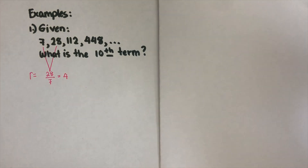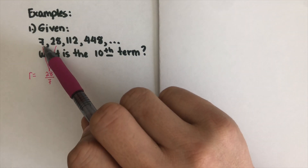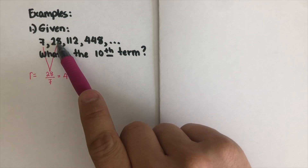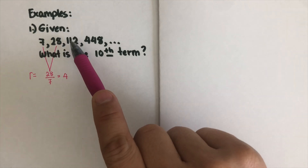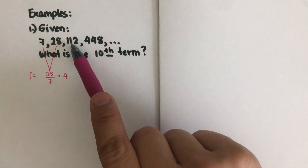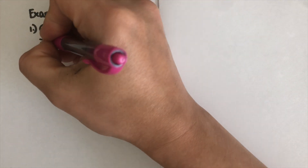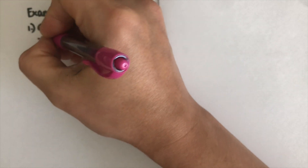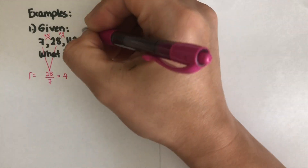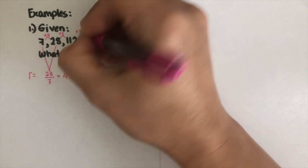Each term is multiplied by 4: 7 × 4 = 28, 28 × 4 = 112, and so on — every step is times 4.